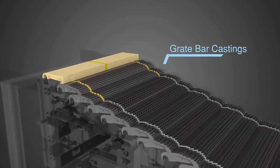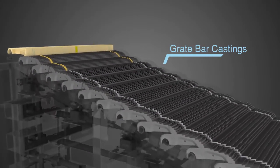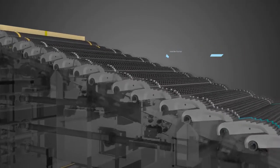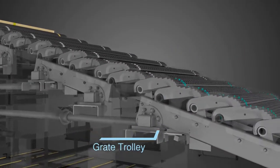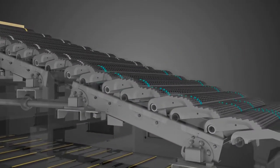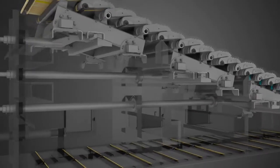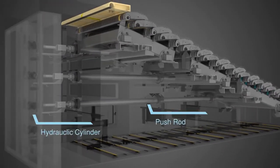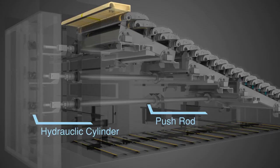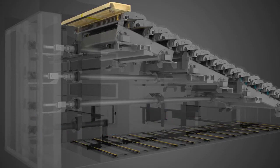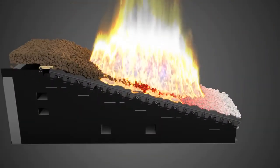Reciprocating grate utilizes successive oscillation of grate castings mounted on different trolleys for the continuous movement of fuel. These trolleys are driven by independent hydraulic cylinders. Alternate movement of grate blocks pushes the fuel in the distinct combustion zones of the grate.